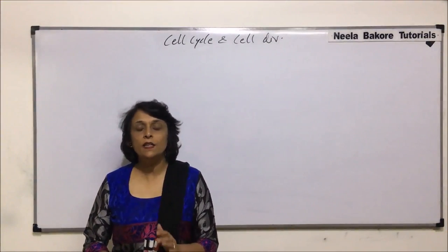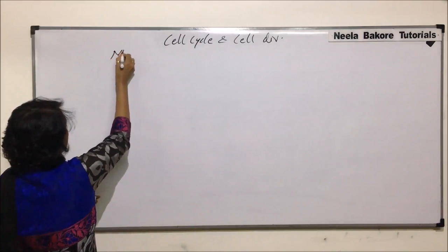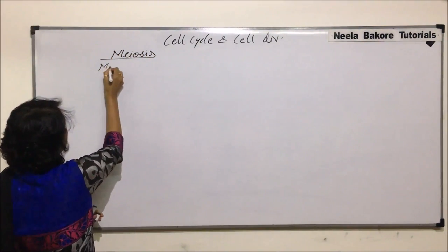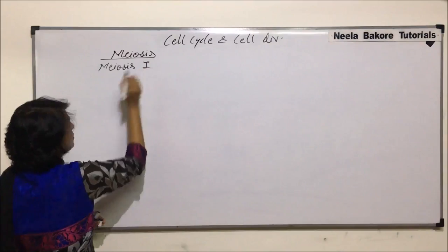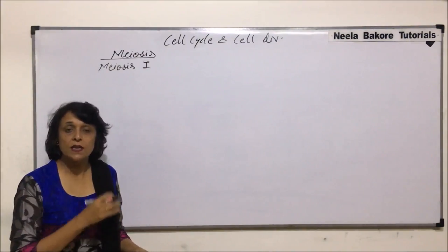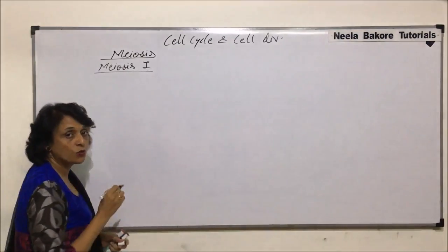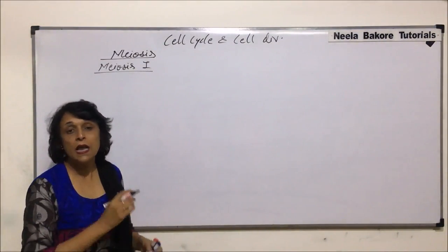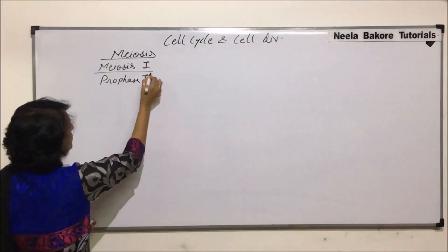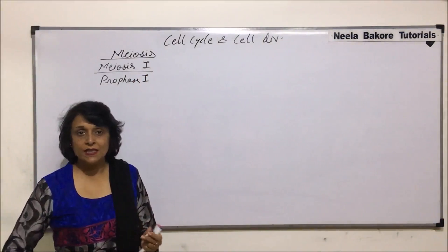We will now take up the individual steps of meiosis. We are starting with meiosis as the entire process, and meiosis one specifically. As we have already discussed, meiosis gets completed in two phases — meiosis one and two. We are starting with meiosis one, and within meiosis one, we are starting with karyokinesis one and prophase one. In prophase one there are five sub-phases: leptotene, zygotene, pachytene, diplotene, and diakinesis.